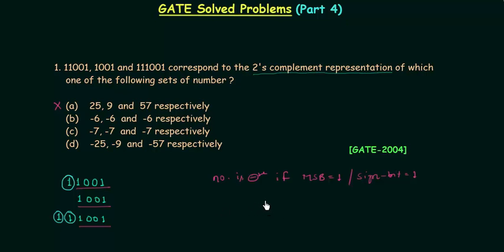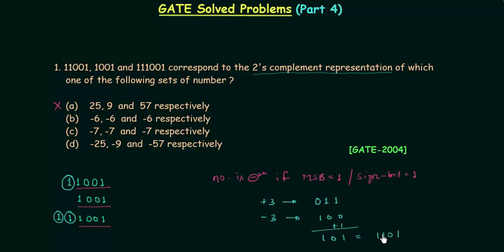For example, if there is a number +3, we represent it as 011. Minus 3: first take the 1's complement, giving 100, then add 1 to get 101. Now the MSB is 1. Extending it as 1101 with one repeated MSB, and again as 11101, it still equals minus 3. So all three representations represent minus 3 — repeating the sign bit does not change the number.